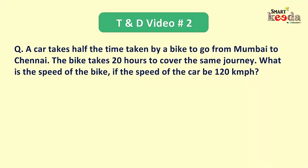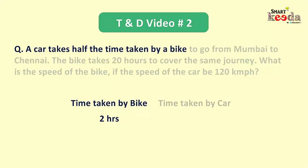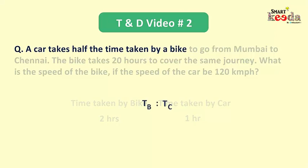Friends, the moment we read the first piece of information which you can see on screen, we can immediately infer that if the bike takes 2 hours to cover a certain distance, the car will take only 1 hour, which is half of the time taken by the bike. This further means the ratio of time taken by the bike to the time taken by the car will be 2:1.